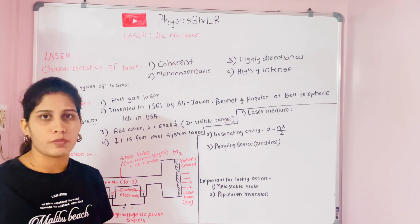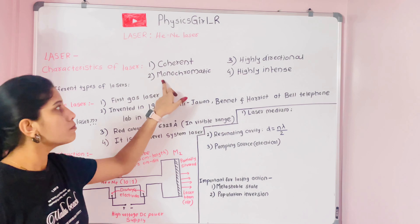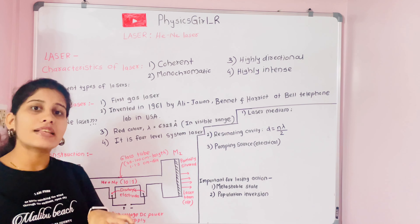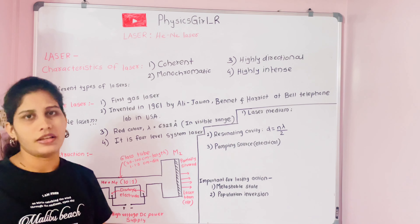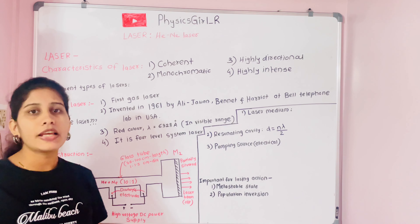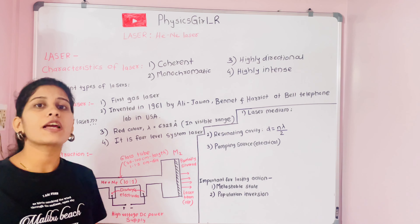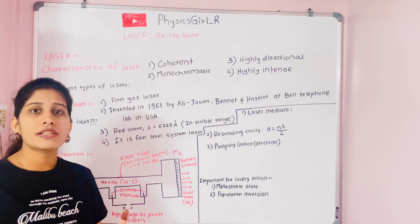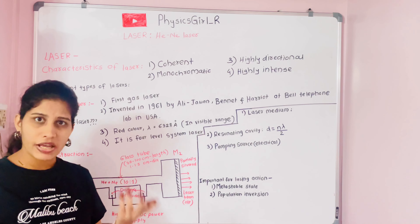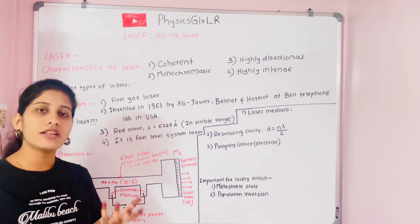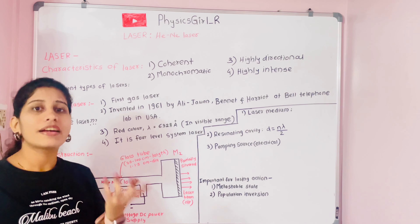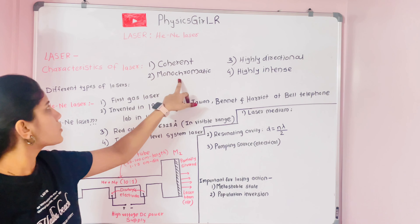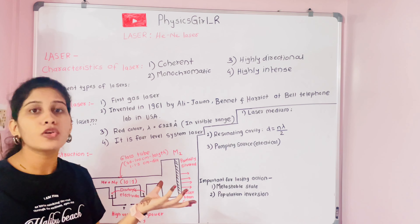The second characteristic is monochromaticity. 'Mono' means single and 'chromatic' means color, so laser light consists of only one color. For example, the helium-neon laser emits red color light having a wavelength of 6328 Å. The argon laser, in contrast, emits green color light and is used in medical applications.